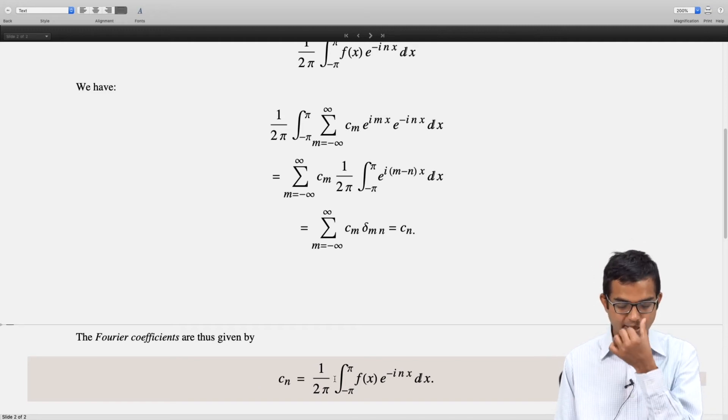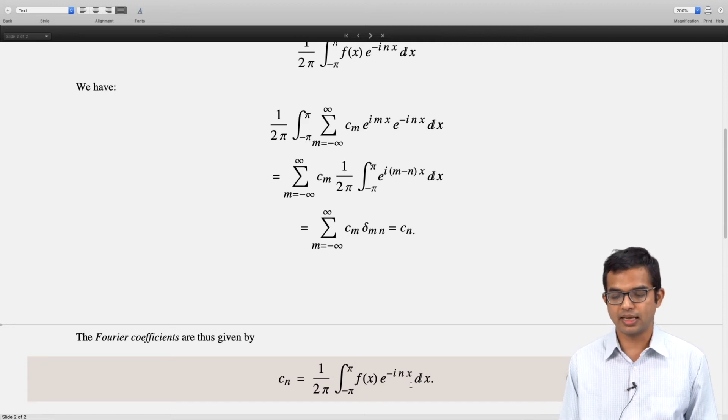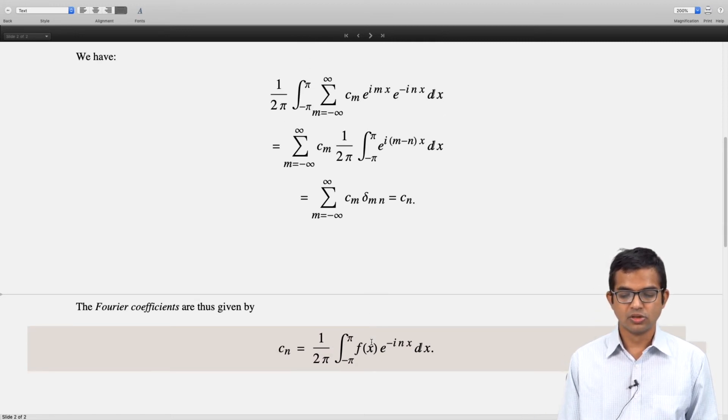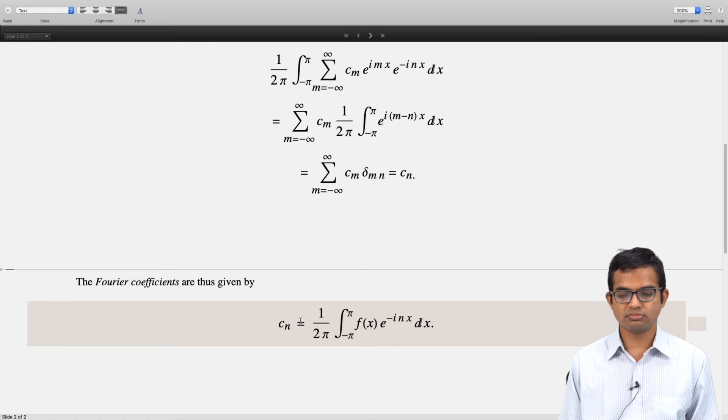cₙ equals 1/(2π) times the integral from -π to π of f(x)e^(-inx) dx.